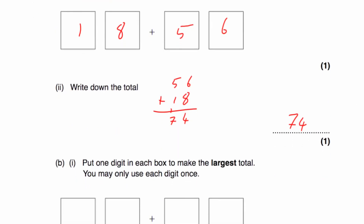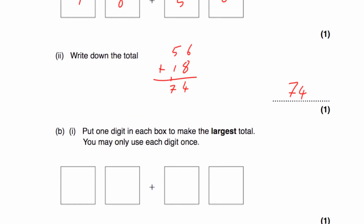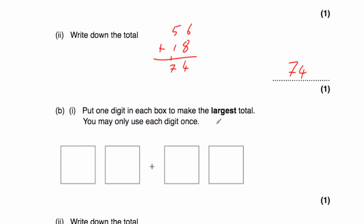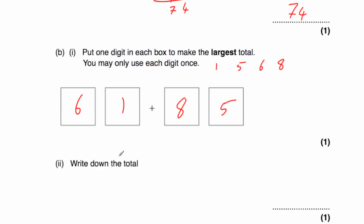Part B says put each digit in the boxes to make the largest possible total. We had the digits 1, 5, 6, and 8. We want to put the bigger numbers in the tens, so we're going to put a 6 and an 8 to make a 60-something plus an 80-something, and then put our 1 and our 5. So we could have 61 plus 85, or 65 plus 81 — they would both give you the same answer. Working out 85 plus 61: 5 plus 1 is 6, and 8 plus 6 is 14. So the answer would be 146.